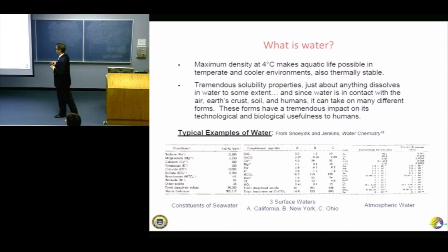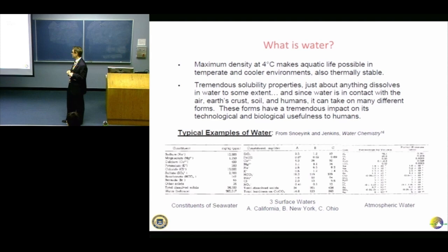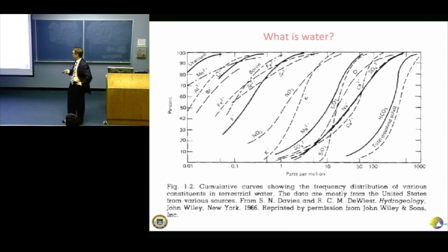It solubilizes just about everything, at least a little bit. This is seawater — not the most useful stuff in the world unless you're a saltwater fish. Atmospheric water, surface waters in California, New York, and Ohio — columns A, B, C — you see different amounts of silicon dioxide, iron, chromium, magnesium, etc. These are cumulative distribution functions for various waters sampled from the U.S. and various constituents. Any particular water might have any combination of these elements in it — it's a complicated substance.